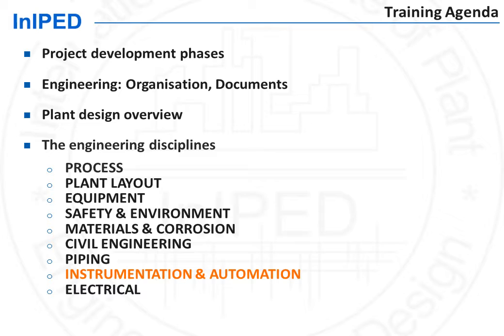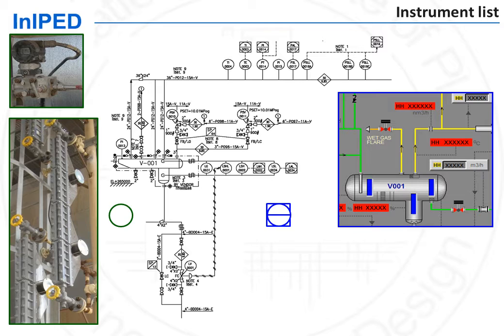This discipline is usually split in three: field instrumentation, systems, and installation. The starting point of the discipline is the P&IDs. On the P&IDs, process has shown all instruments required for monitoring, control and shutdown. For monitoring, process also specifies if the measurement shall be locally available or available remotely from the control room.